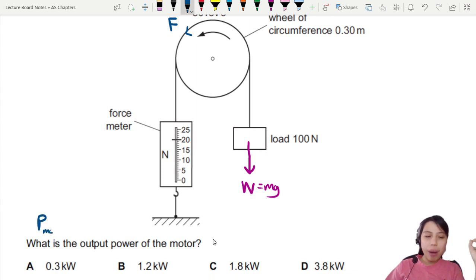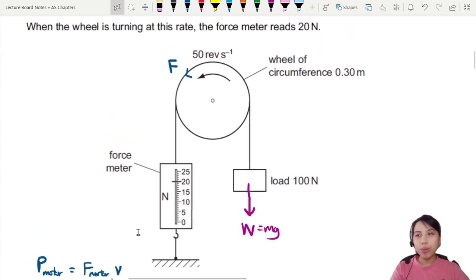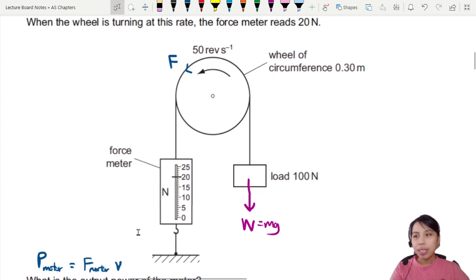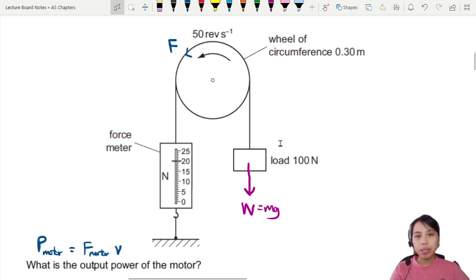To find the power of the motor, you need to know what force the motor exerted on that rope and how fast it's rotating or moving at that time. The important clue is that the force meter will read 20 newtons, not 100 newtons—it's much less.